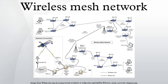Operation: the principle is similar to the way packets travel around the wired internet — data will hop from one device to another until it reaches its destination. Dynamic routing algorithms implemented in each device allow this to happen. To implement such dynamic routing protocols, each device needs to communicate routing information to other devices in the network. Each device then determines what to do with the data it receives — either pass it on to the next device or keep it, depending on the protocol. The routing algorithm used should attempt to always ensure that the data takes the most appropriate route to its destination.